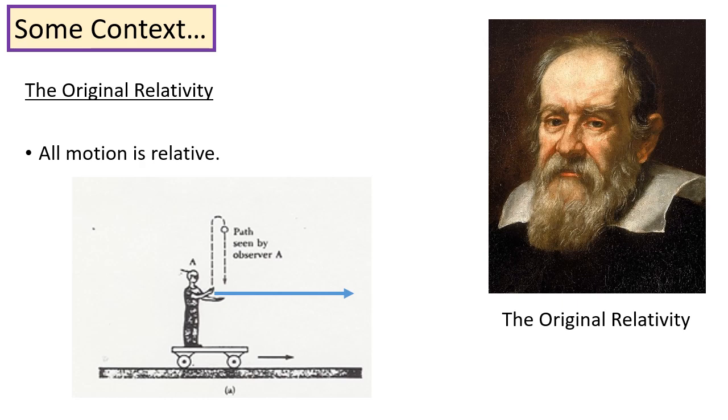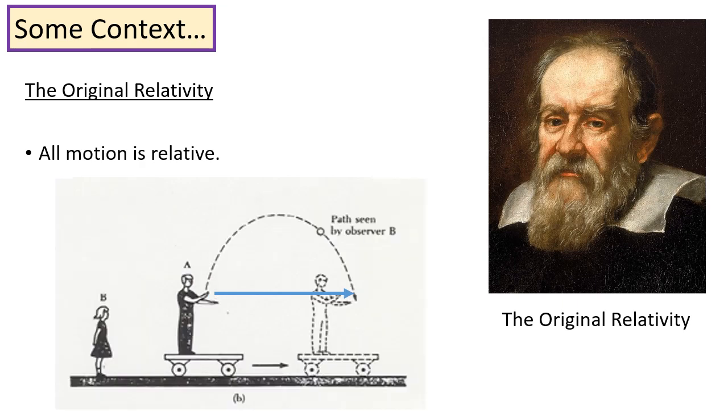To you, travelling on the vehicle, the ball has gone straight up and straight back down. However, an observer on the roadside has seen the ball travel a distance equal to the velocity of the vehicle times the time that the ball is in the air.